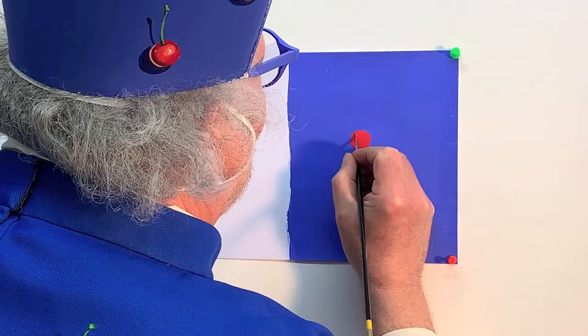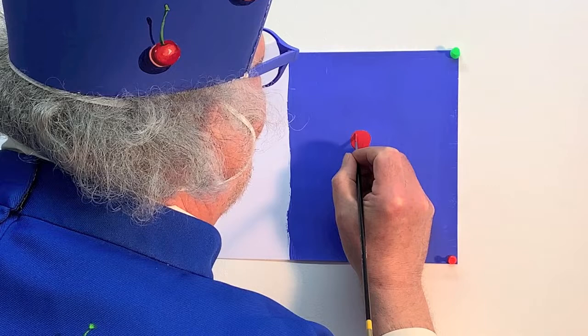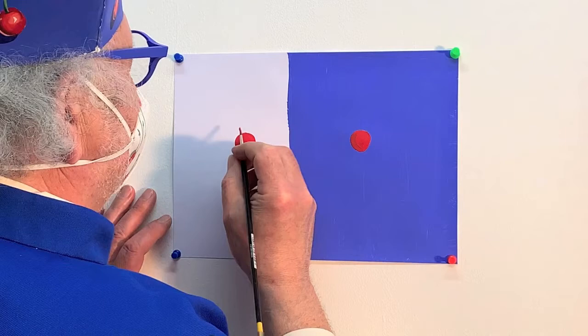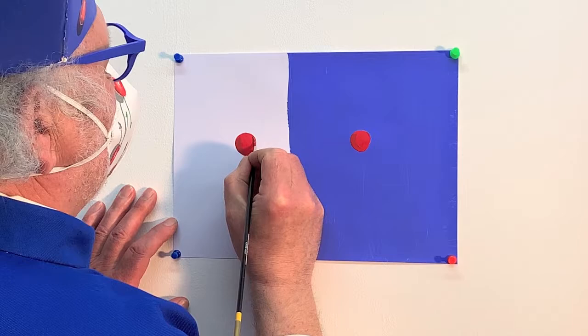Okay, now you apply like a quarter moon of burnt sienna on the left side of the cherry, and a little zit here on the top corner of the cherry. Here we go.